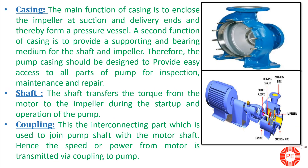The next part is the casing. The casing is the outer body of the pump — it can be called the outer hub. The casing is the mother in which everything is mounted. It is made by a casting process, with some machining done afterward to improve strength and finish. The casing houses the impeller, the suction end, and the delivery end, forming a pressure vessel.